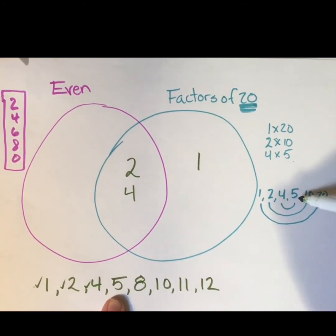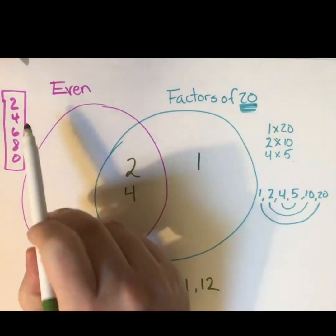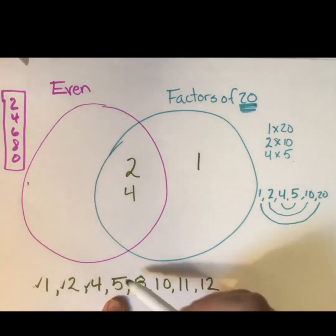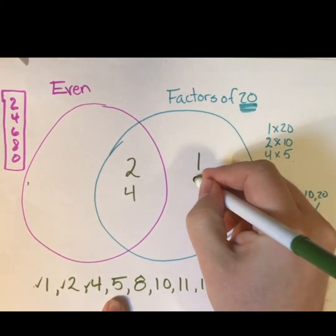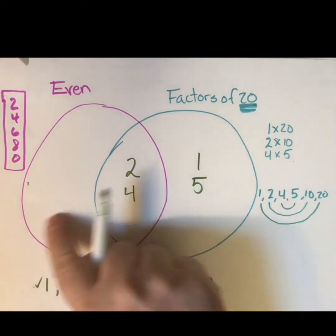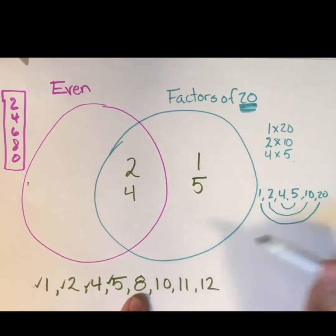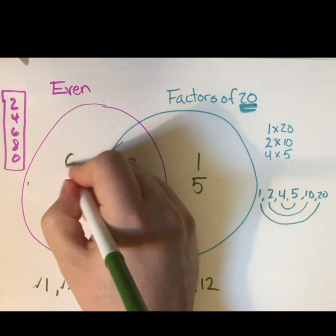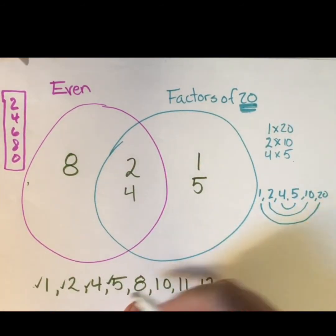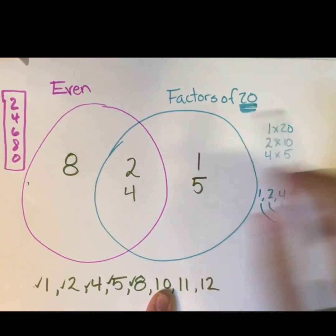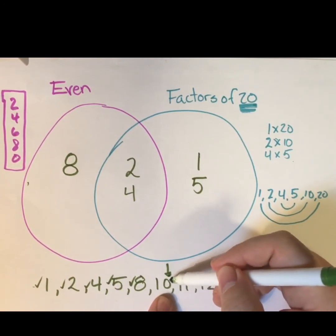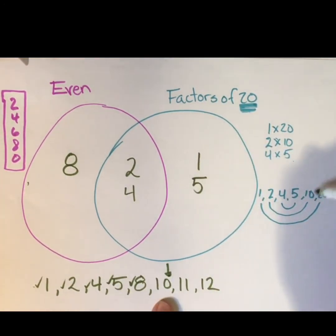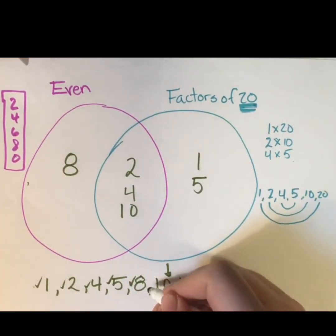Five is a factor of 20 — four times five is 20 — but is five even? No, five is odd. So while it is a factor of 20, it is not even, so it goes on just the factors side because it doesn't fit both. Eight is not one of my factors, but it is an even number, so I'm going to put eight on the even side. Ten is a factor of 20, and it ends in zero, so it is both a factor of 20 and an even number — ten goes right in the middle.